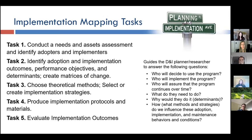The implementation mapping tasks outlined in that paper include things that seem fairly logical: you conduct a needs and assets assessment, identify who the adopters and implementers are, identify specific outcomes — what we call performance objectives — along with determinants and matrices of change. You choose methods, operationalize them, and then produce implementation protocols and materials and evaluate your outcomes.